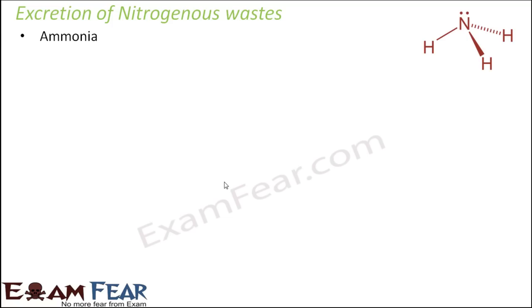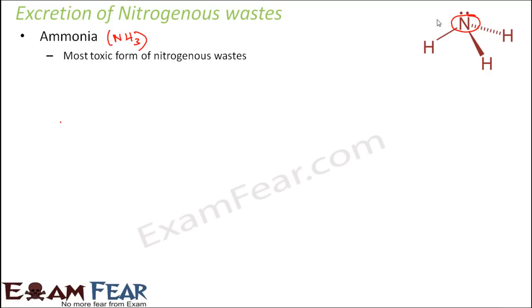First we will talk about ammonia. Ammonia is NH3, that is one nitrogen bonded to three hydrogen atoms. You can see the structure of ammonia and now you know why they are called nitrogenous wastes — because of the presence of nitrogen. It is the most toxic form of nitrogenous waste, so the body should get rid of ammonia as soon as possible.